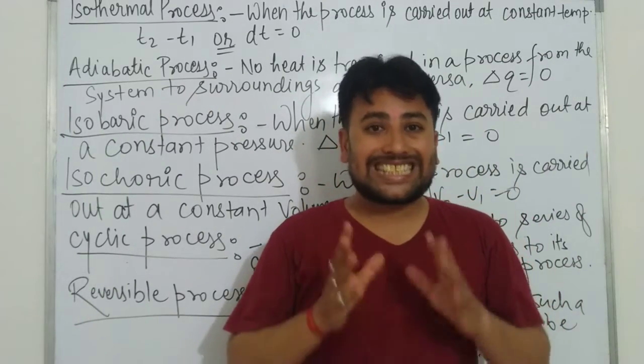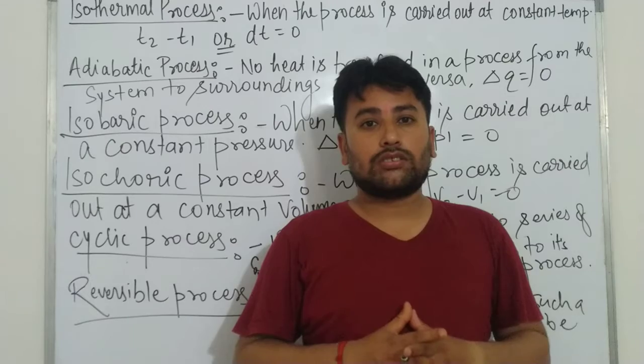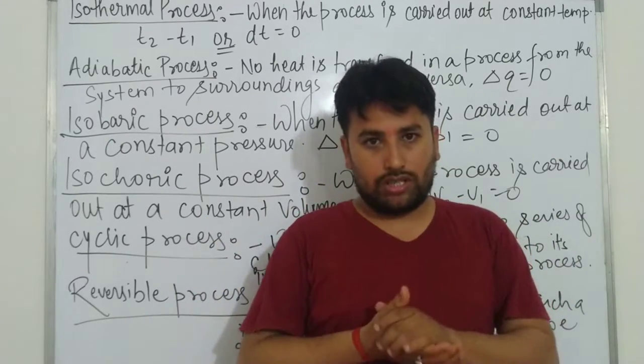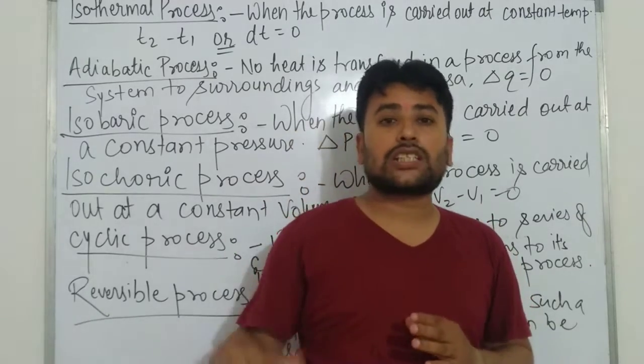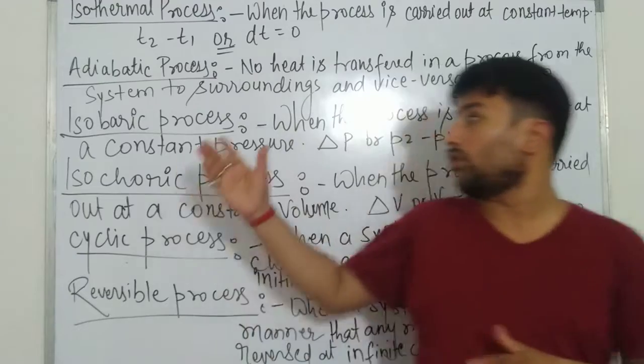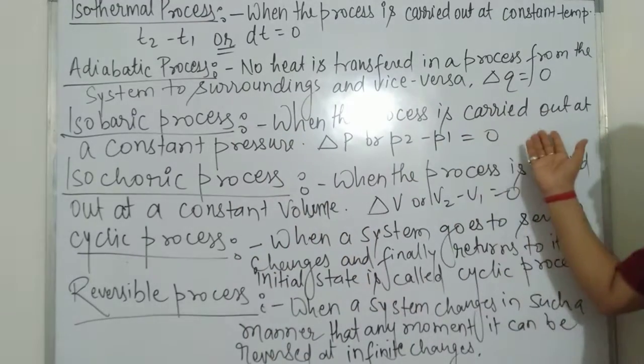Adiabatic process is carried out with constant changes of energy. There is no heat changes from the system to surrounding or surrounding to system. Its delta q is equal to zero when the process is carried out.